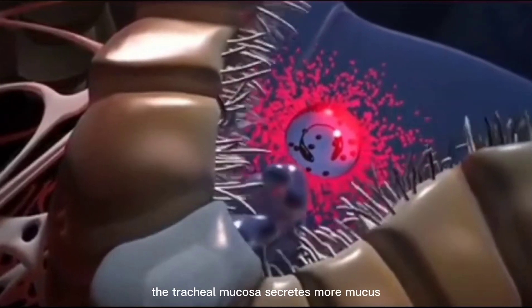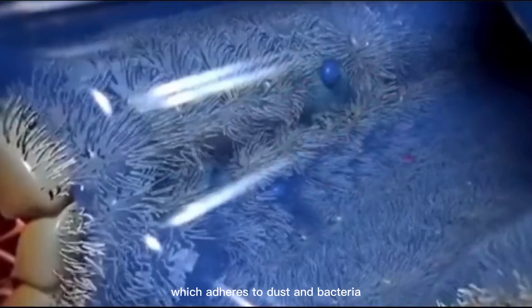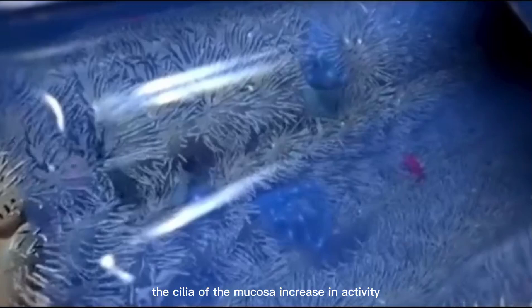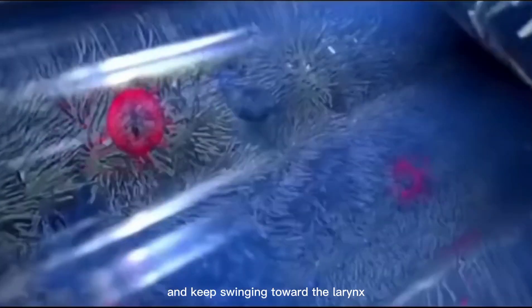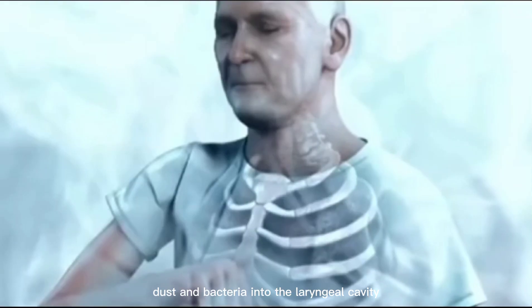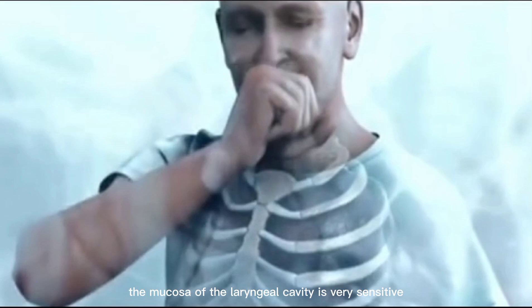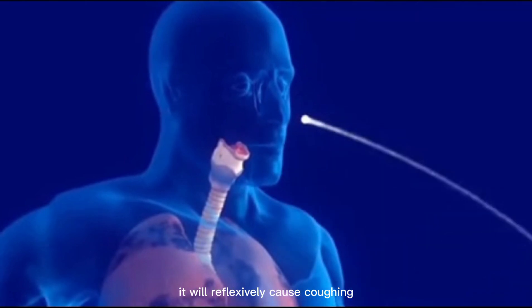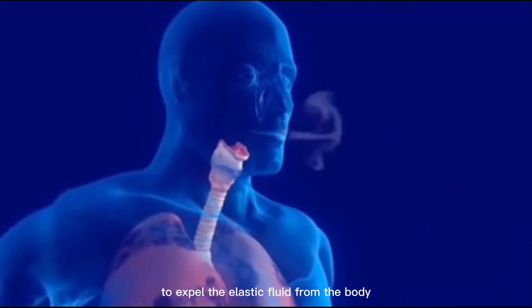The tracheal mucosa secretes more mucus which adheres to dust and bacteria. The cilia of the mucosa increase in activity and keep swinging toward the larynx, pushing mucus, dust, and bacteria into the laryngeal cavity. The mucosa of the laryngeal cavity is very sensitive. When stimulated by the mucus, it will reflexively cause coughing to expel the mucus from the body.